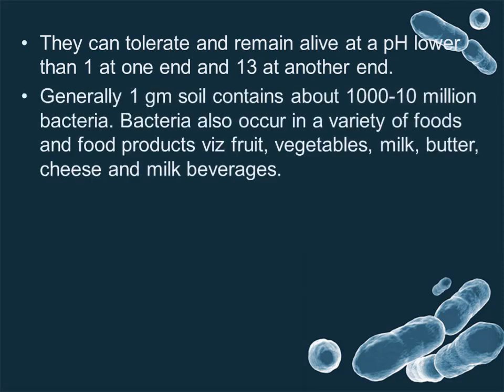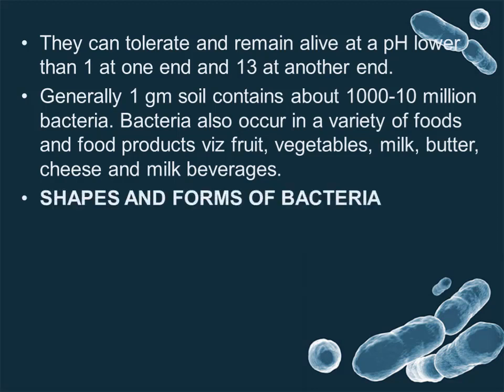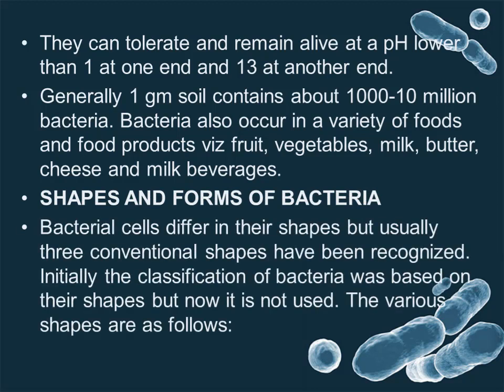Generally, one gram of soil contains about one thousand to ten million bacteria. Bacteria also occur in a variety of foods and food products — for example, fruits, vegetables, milk, butter, cheese, and milk beverages. Bacteria cells differ in their shapes, but usually three conventional shapes have been recognized. Initially, the classification of bacteria was based on their shapes, though this is not commonly used now.